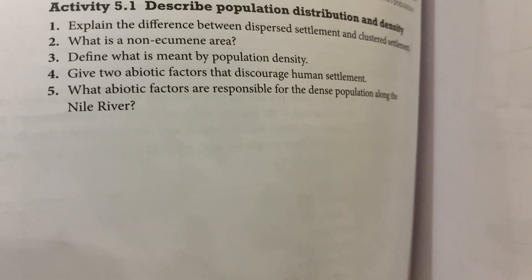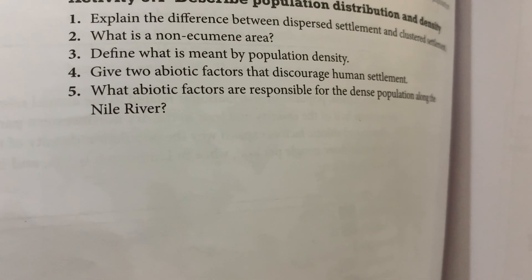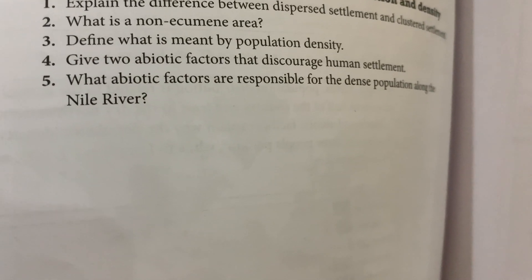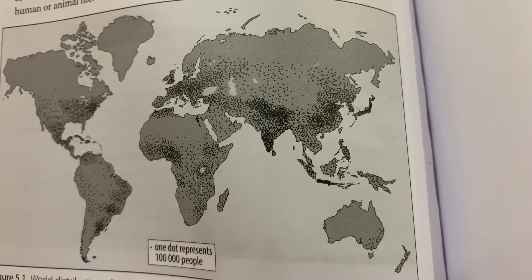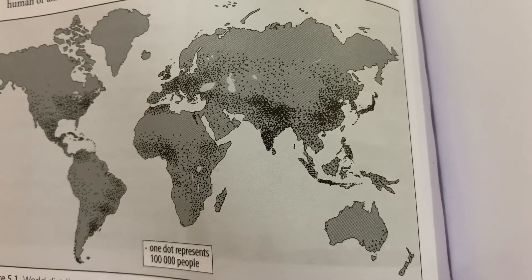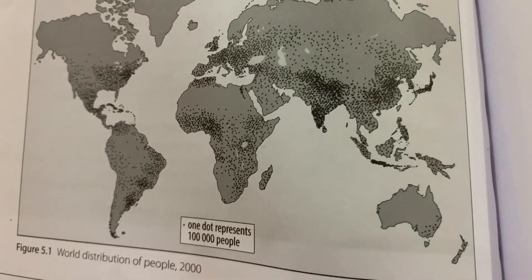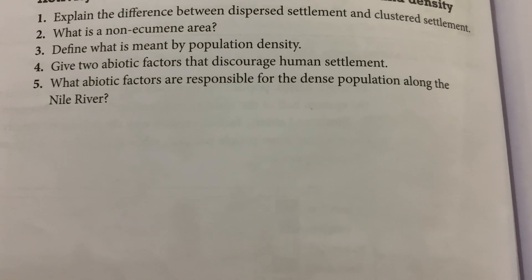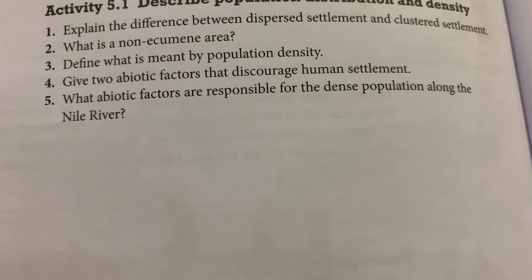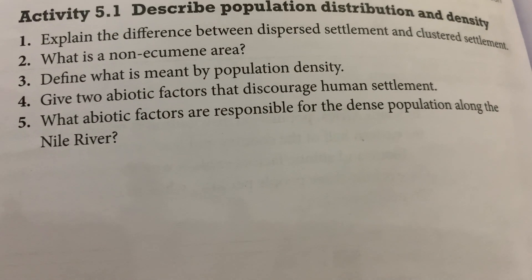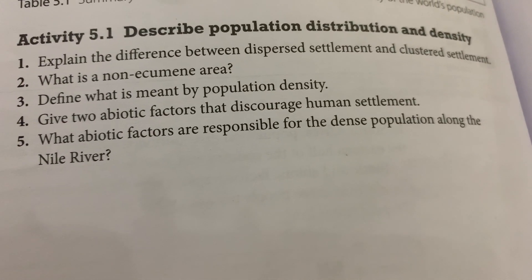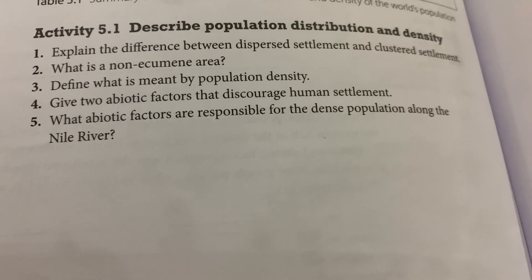The second question: define population density. As mentioned earlier, population density is the number of people living in a square kilometer of land. Third question: what is a non-ecumene area? Non-ecumene areas are those areas that don't have a lot of dots on the map — areas that are harsh and not suitable for human population. Two abiotic factors that discourage human settlement: harsh climate and dry or steep land.